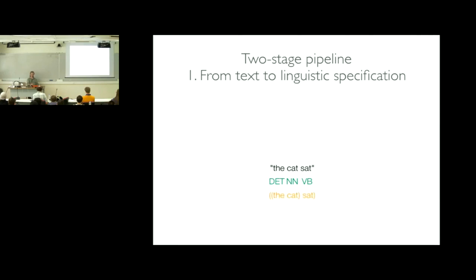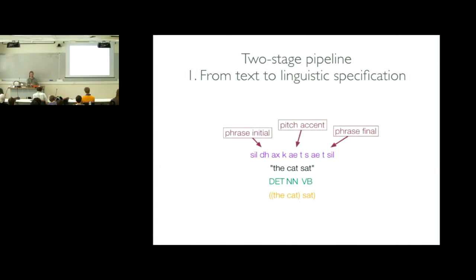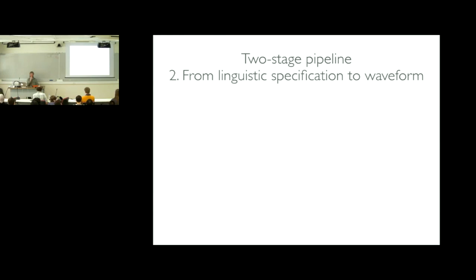Knowing about the structure of the text might be helpful for where to put phrasing. We certainly want to know the pronunciation — the sequence of sounds. In some languages that might be a trivial mapping from the spelling; in English, it's certainly not. We might want to start some representation of prosody and so on. We're trying to enrich the text with lots of information, and we need to bring external knowledge sources to do that. When we've got that, we can generate our waveform.